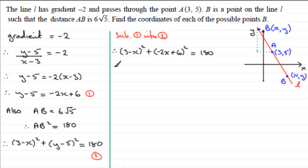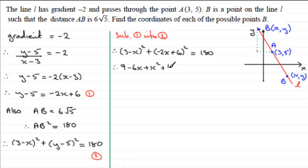Let's expand the brackets — we now have an equation with just one variable, x. Expanding (3 minus x) squared: 9 minus 6x plus x squared. Expanding (minus 2x plus 6) squared: 4x squared minus 24x plus 36. So we have 9 minus 6x plus x squared plus 4x squared minus 24x plus 36 equals 180.